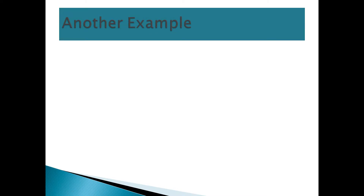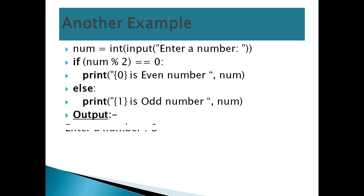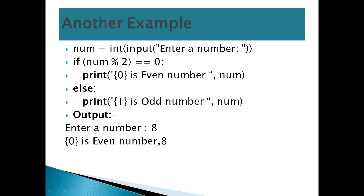Another example using if-else: check whether a number is even or odd. num equals int(input('enter a number')). If num remainder 2 equals 0 — say the user enters 8, 8 remainder 2 equals 0, condition true — print 'number is even'. If the user enters 9, 9 remainder 2 equals 0 is false, so print '9 is an odd number'.